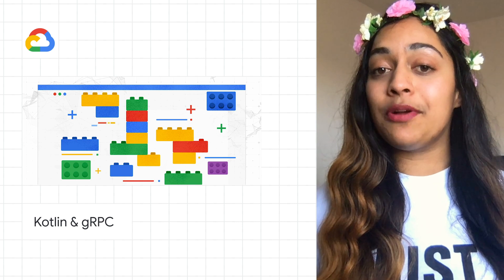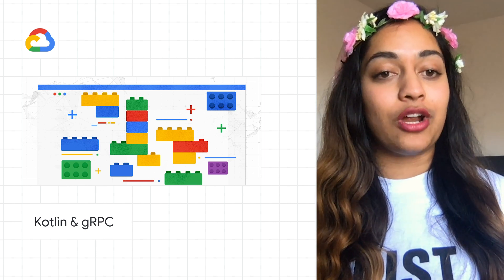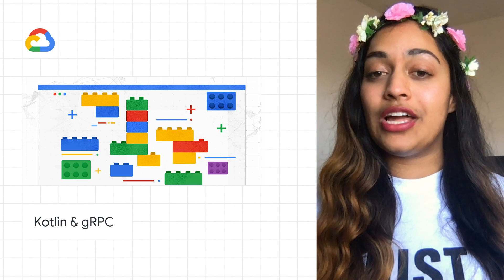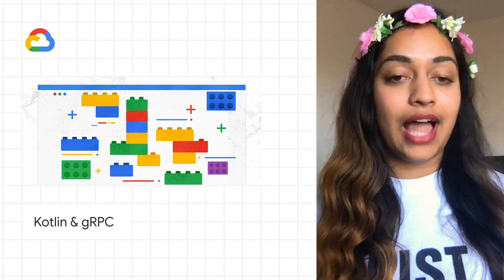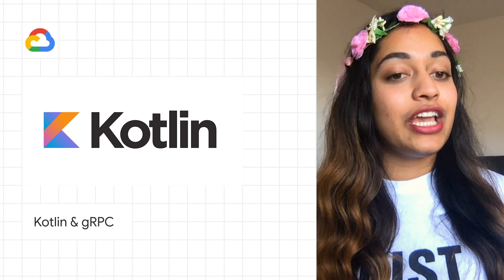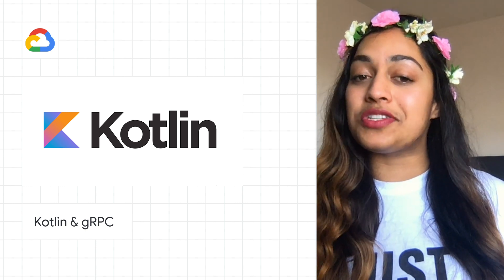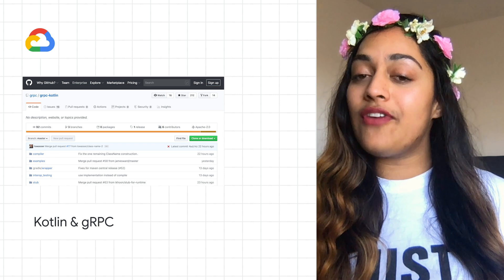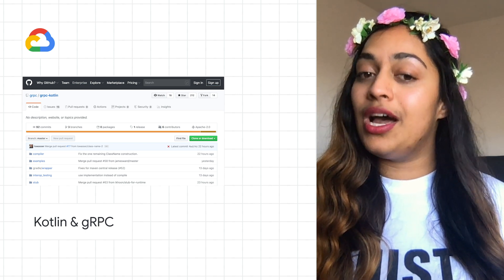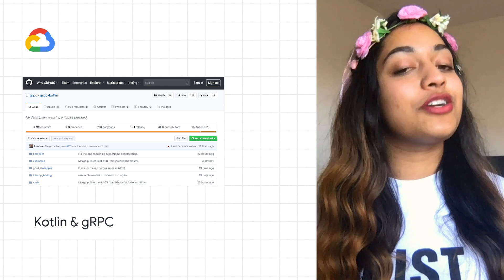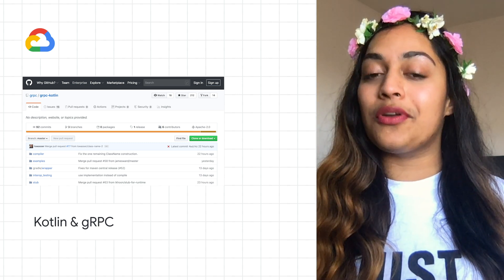gRPC is a high-performance, open-source, universal RPC framework originally developed here at Google that you can use to connect services more easily and reliably. Paired with Kotlin, you could build everything from mobile apps to cloud microservices. To help, we've open-sourced gRPC Kotlin for the JVM, allowing you to use gRPC with your Kotlin projects. More details and sample code are on the post.